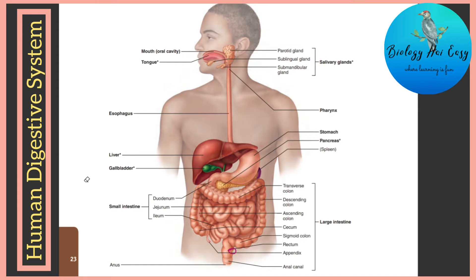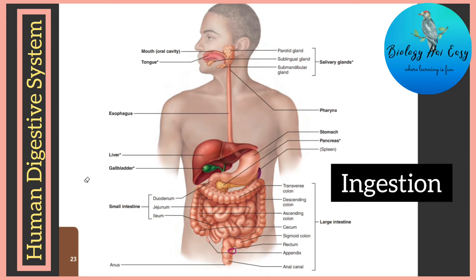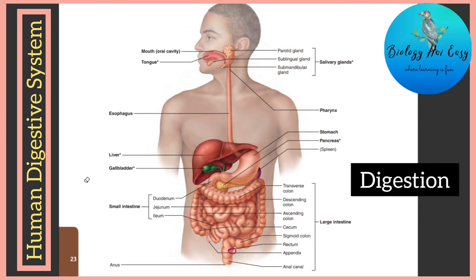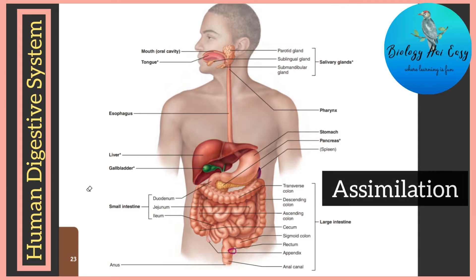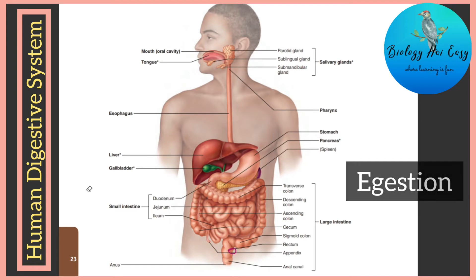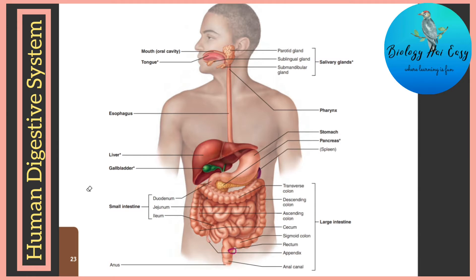There are five steps in the process of nutrition in animals. First is ingestion, where we take in food. Then digestion, where food containing large insoluble molecules is broken down into small water-soluble molecules. Then absorption, where digested food passes through the intestinal wall into the bloodstream. In assimilation, absorbed food is taken in by body cells and used for energy, growth and repair. The last step is egestion, where undigested food is removed from the body.